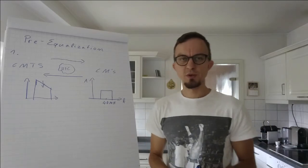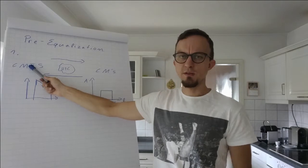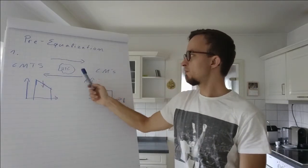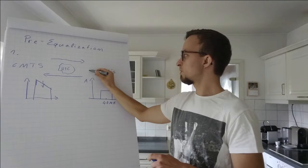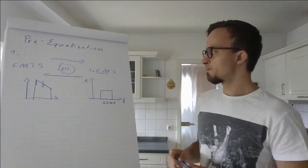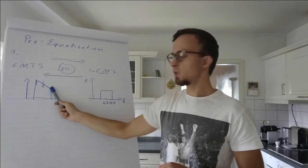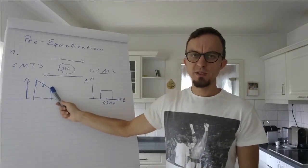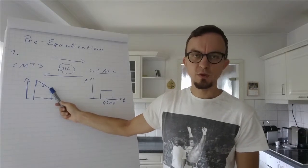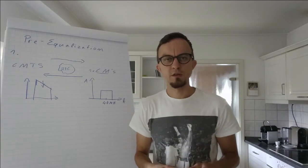Now the cool thing is what DOCSIS pre-equalization does. The CMTS tells the cable modem - just the one cable modem we are talking about - I've heard that you are sending this kind of signal. So please, if you are sending the next one, adapt your equalizers inside your transmitter.